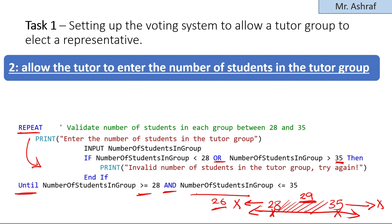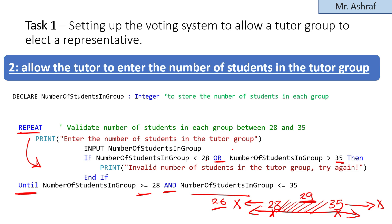This loop will keep repeating the input prompt until a correct value between 28 and 35 is entered. That covers everything for the first two steps. In the next video — wait, I forgot something important.